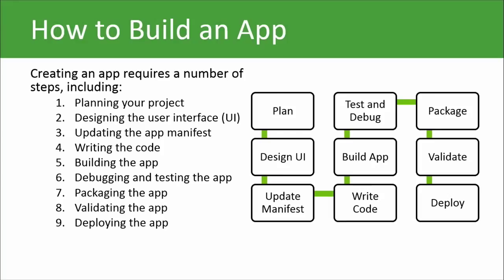There are nine basic steps for building an app, and these are really good things to keep in mind when going through the app-building process. First, you want to plan your project. Then you have to design your user interface — the user interface is what you see on the screen when you visit a website or use an application; it's everything you can interact with. Next, you want to update the app manifest.